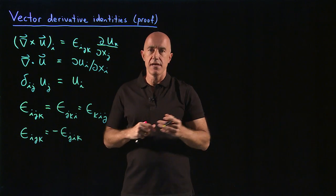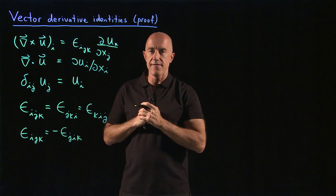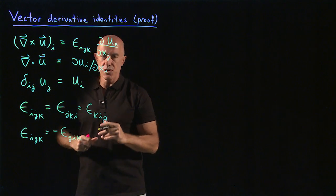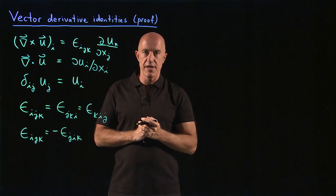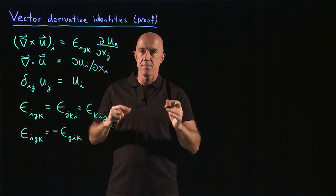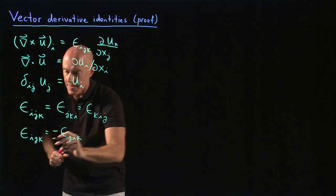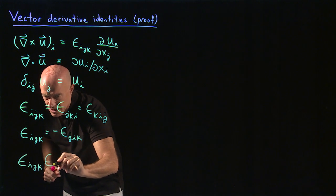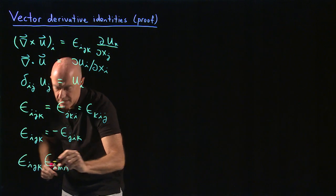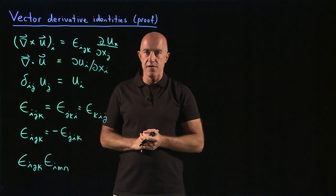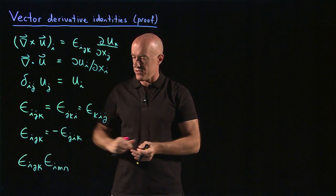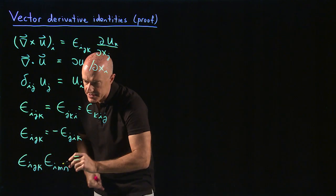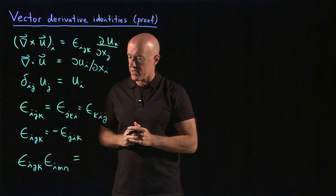Finally, the identity that you need when you have two cross products in the expression. You will get two Levi-Civita tensors together, and they most likely will be contracted. That would end up with epsilon_ijk times epsilon_imn. So then we're summing over the first index of the Levi-Civita tensor. So i equals 1 plus i equals 2 plus i equals 3.